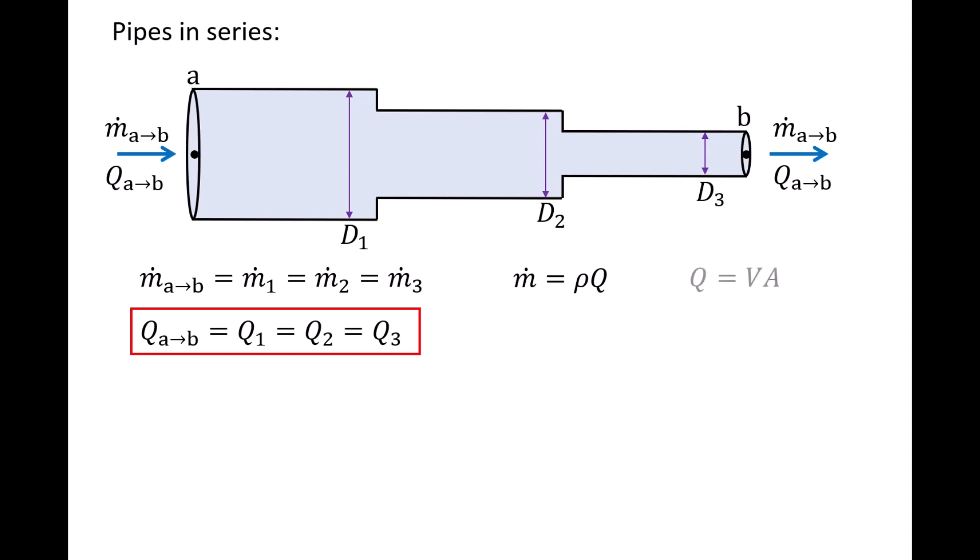The volumetric flow rate is equal to the flow speed V times the cross-sectional area A. Since the pipe diameter changes, the speed changes as well to maintain a constant volumetric flow rate.